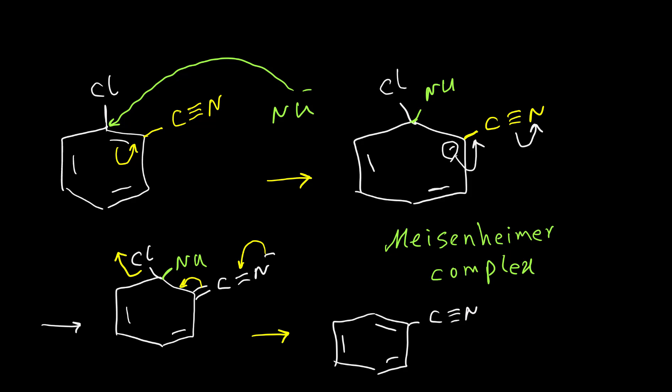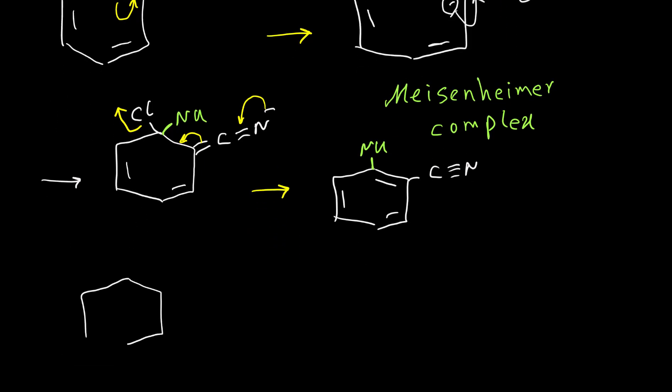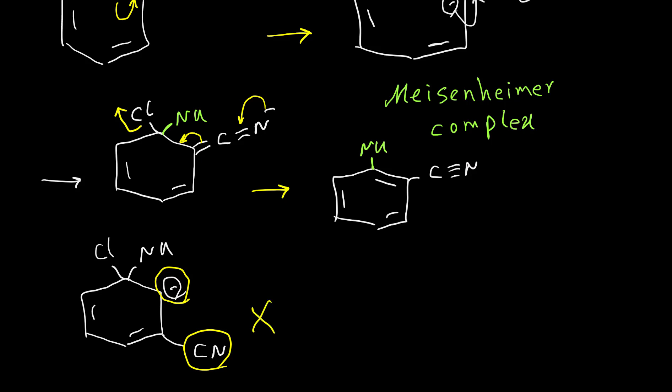We have the double bonds formed inside the benzene ring, and instead of chlorine we now have our nucleophile. When we have an electron-withdrawing group like cyanide on the ortho or para position, the negative charge can form a resonance structure and stabilize the Meisenheimer complex. But if the electron-withdrawing group is on the meta position, when the nucleophile adds to the ring, the cyanide group cannot make resonance with the negative charge. So this anion is very unstable and normally doesn't form. Therefore, for NAS reaction, the electron-withdrawing groups must always be on the ortho or para position relative to the leaving group.